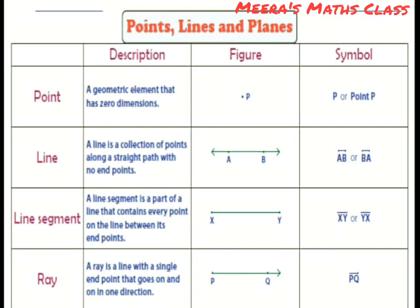Then comes line. A line is a collection of points along a straight path with no end points.